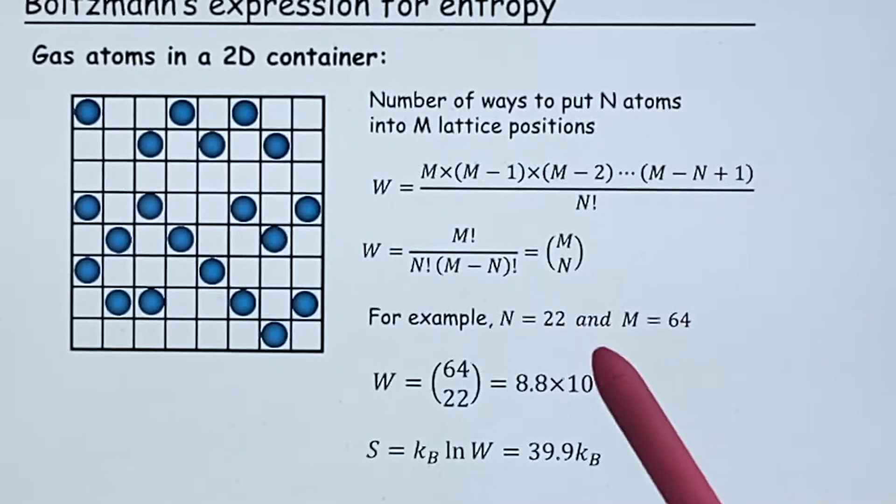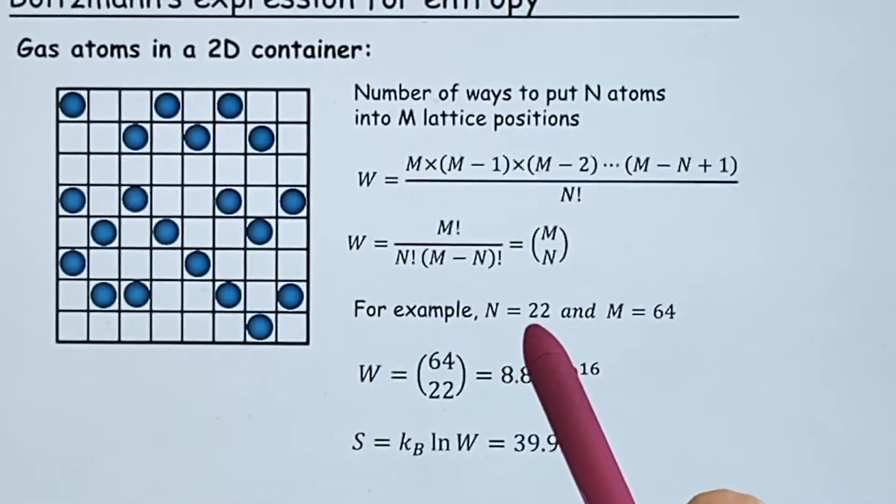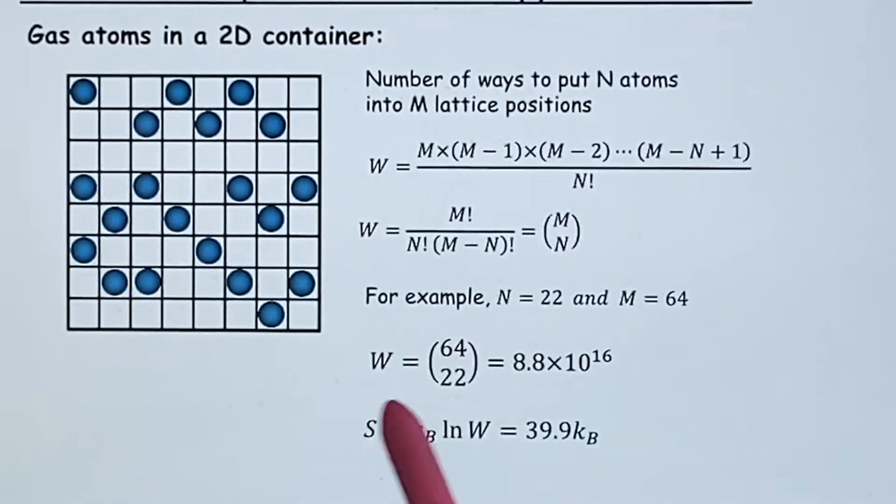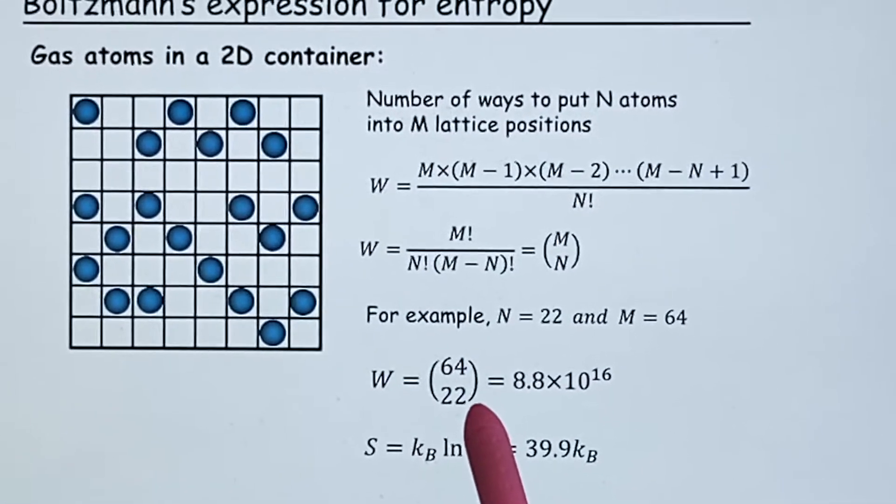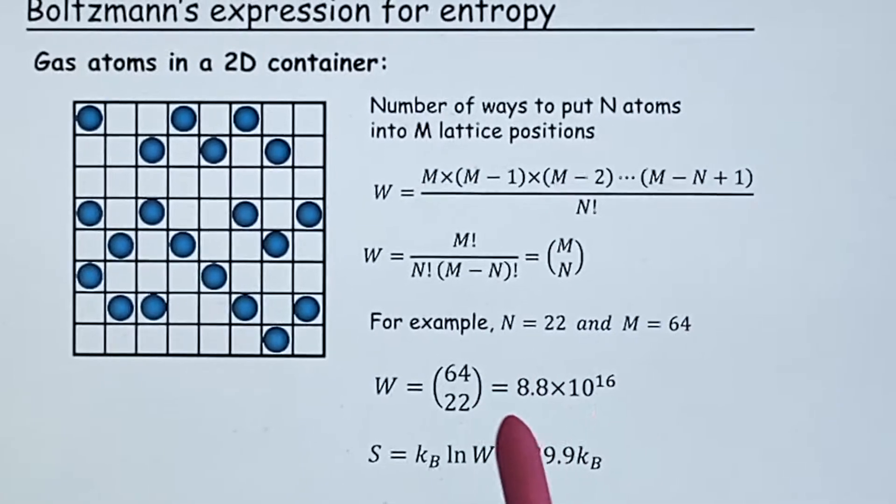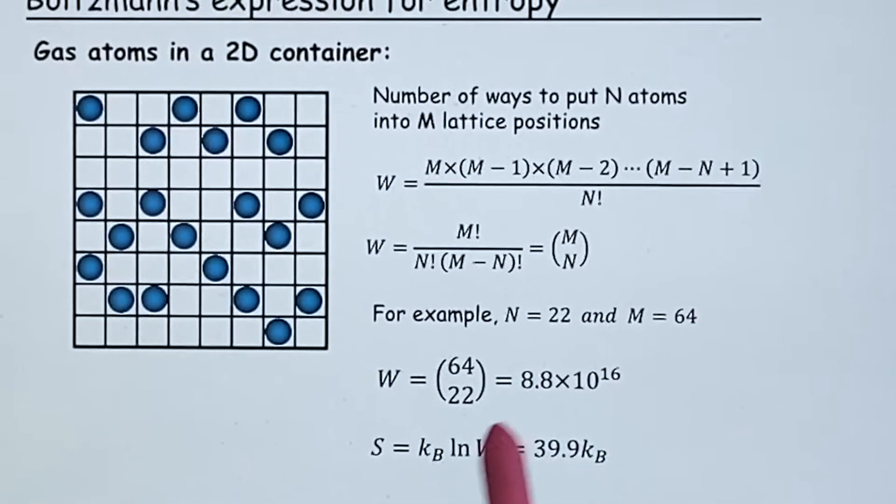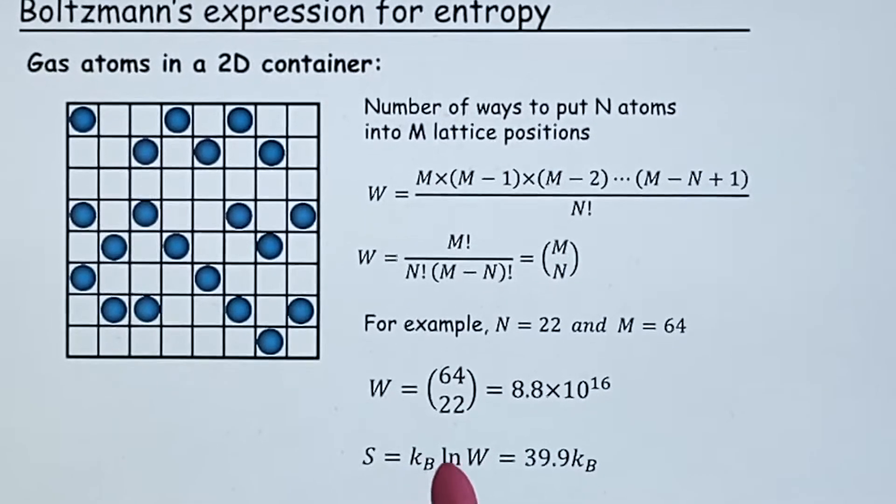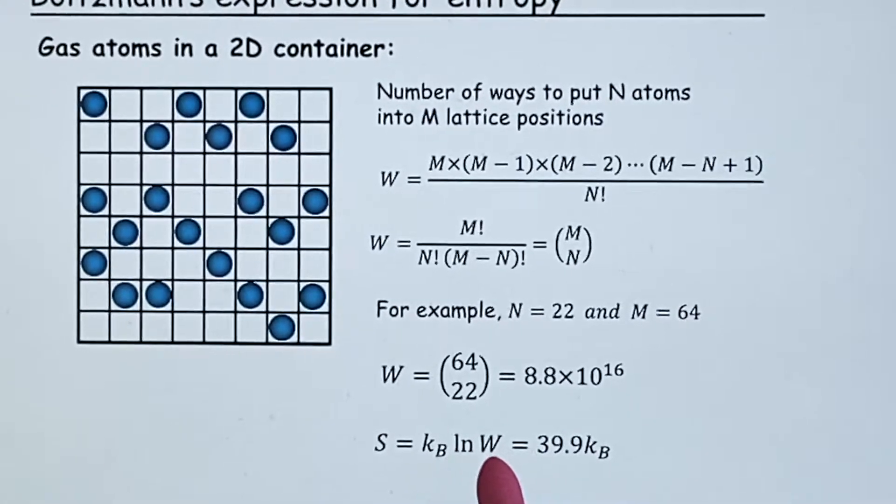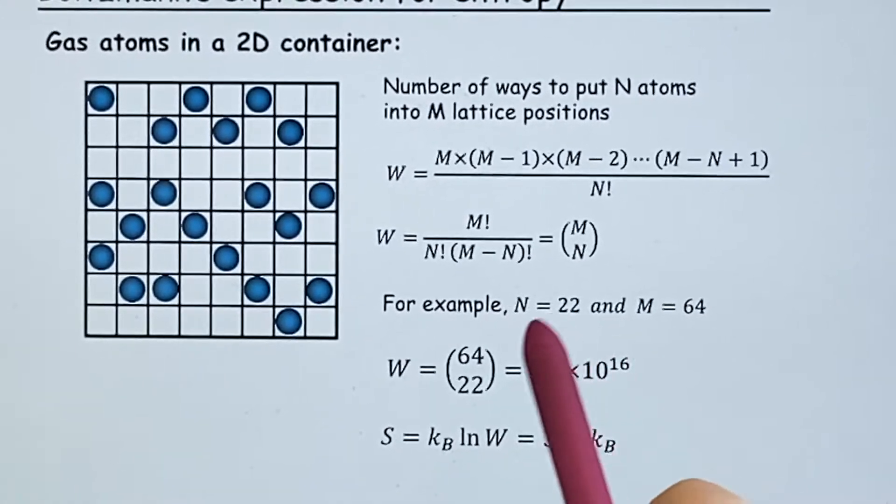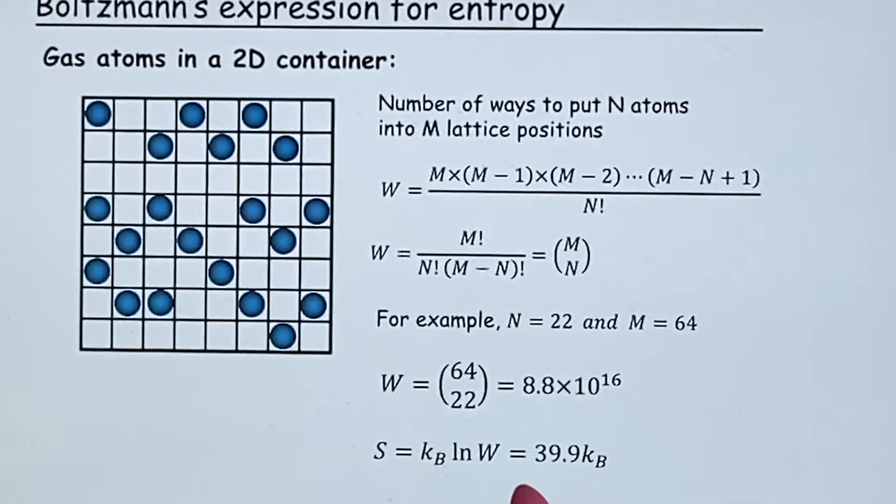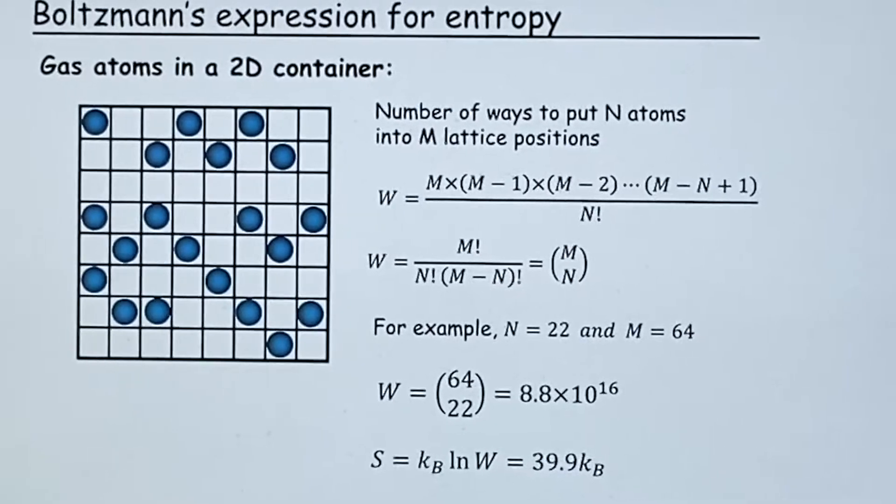So here's an example where we're putting 22 things into 64 places. Symbolically, it looks like this. And if you were to work this out, you would end up with this number. But remember, S is defined as Boltzmann's constant times the natural log of W. When you take the natural log of this, you get a much smaller number. And you end up with something semi-reasonable for an answer.